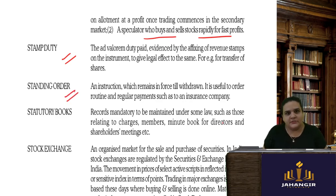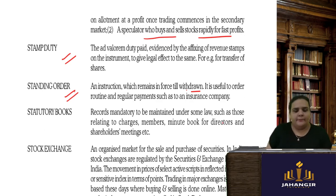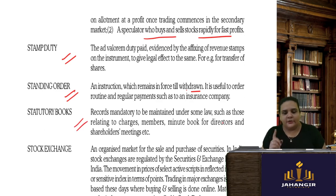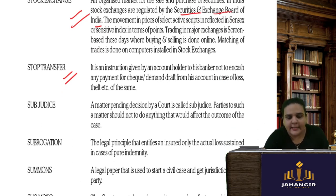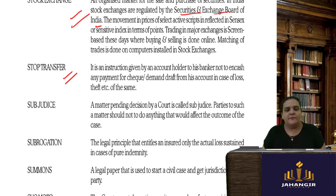Stamp duty is paid to the government for transfer of shares, and also applies to immovable and movable properties. A standing order is an instruction to your bank that remains in force until withdrawn — for example, a standing instruction to deduct rent or insurance payments from your account. Statutory books are books required to be maintained under law. Stock exchange is where sale and purchase of securities occurs, governed by the Securities and Exchange Board of India. A stop transfer is an instruction by an account holder to the banker not to encash any payment for a cheque or demand draft in case of loss or theft. Subjudice refers to a matter pending its decision in court — parties must not take any action that could affect the outcome.